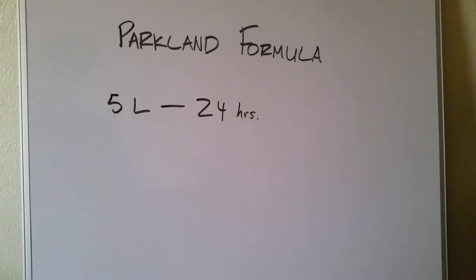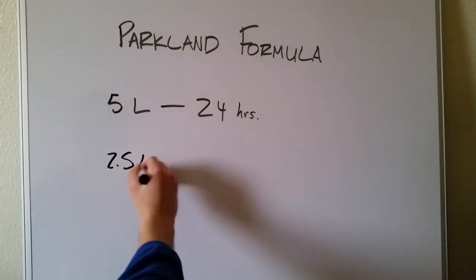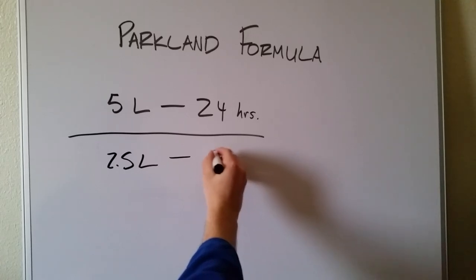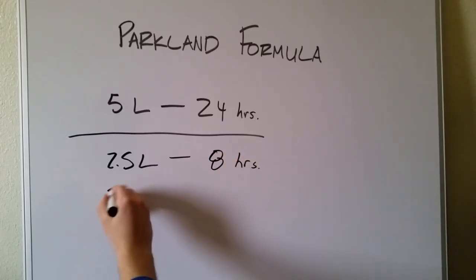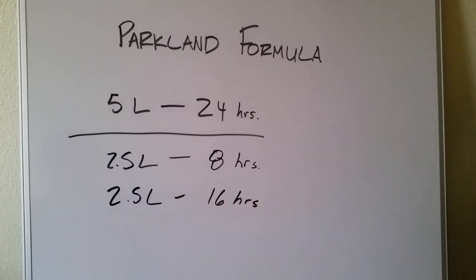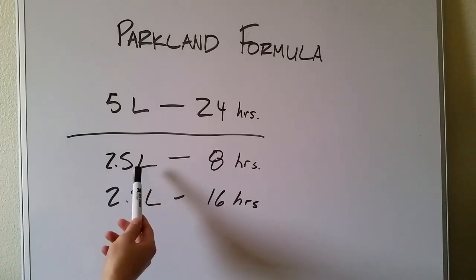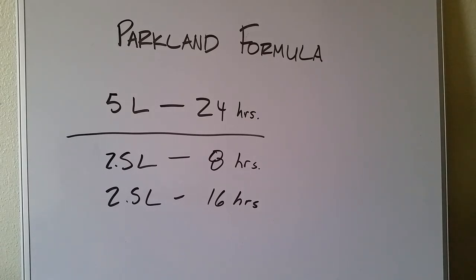Is that it? Not quite — there's one more trick here. Half this amount has to be given in the first eight hours, and the second half is given in the remaining 16 hours. So you're going to change your IV rates after a third of a day after the injury. For example, 2,500 milliliters divided by eight hours gives you the rate on your IV pump. After eight hours, you switch to a slower rate to pump in the rest of that fluid.